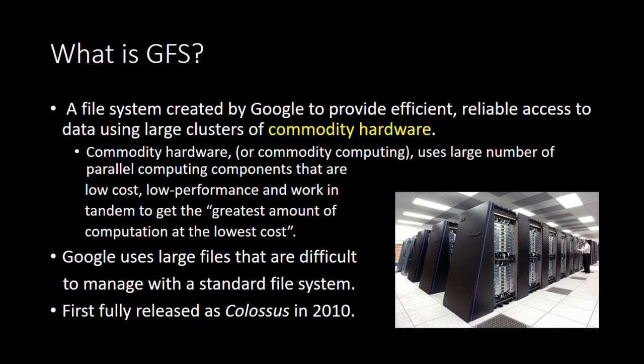Google uses large files that are difficult to manage with a standard file system, and that was the need to create a new one. These data sets tend to be in the multiple terabyte range, so really hard to manage. The first fully released version of the Google File System was known as Colossus in 2010.